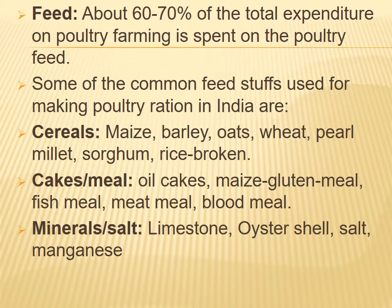Common feed stuffs used for making poultry ration in India include cereals: maize, barley, oat, wheat, pearl millet, sorghum, and broken rice. Also used are oil cakes, maize gluten meal, fish meal, meat meal, bone meal, and blood meal. Minerals include limestone, oyster shell, salt, and manganese.